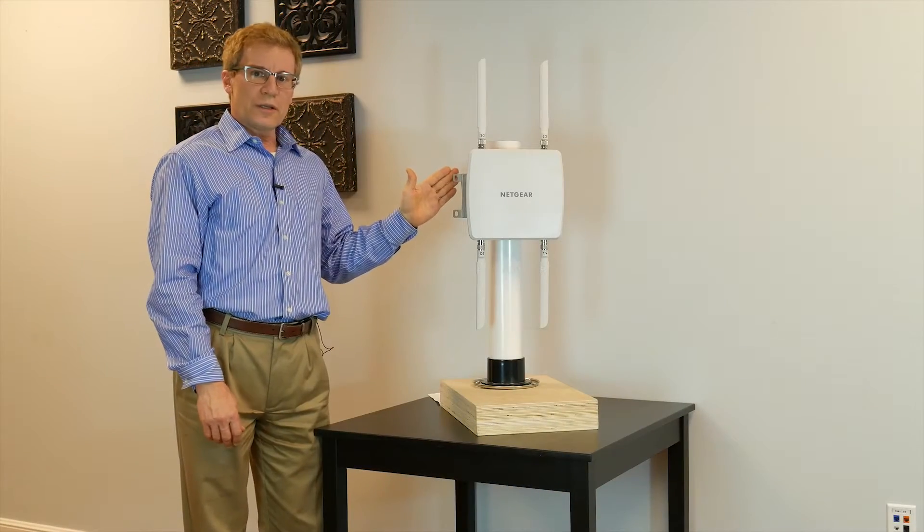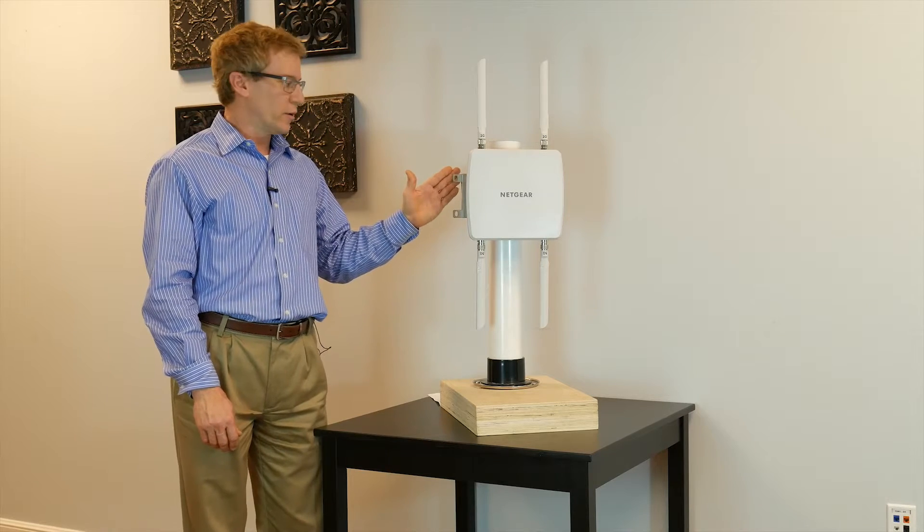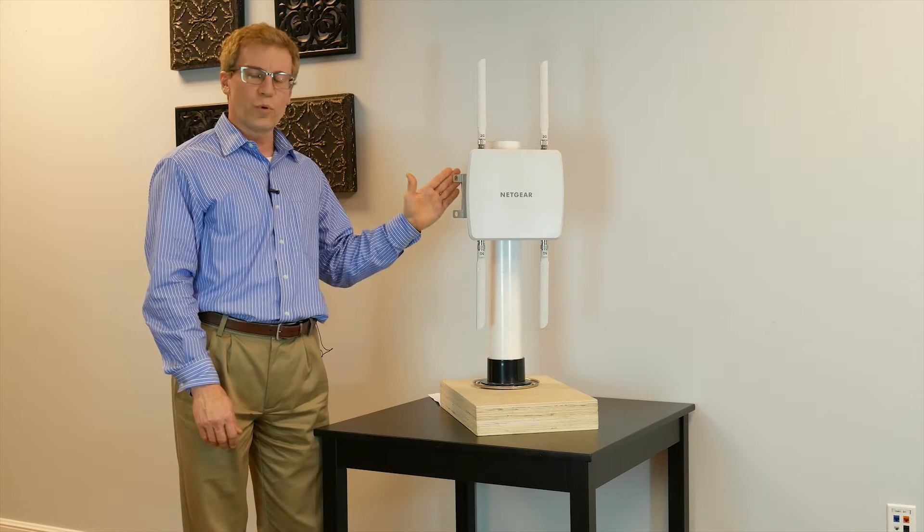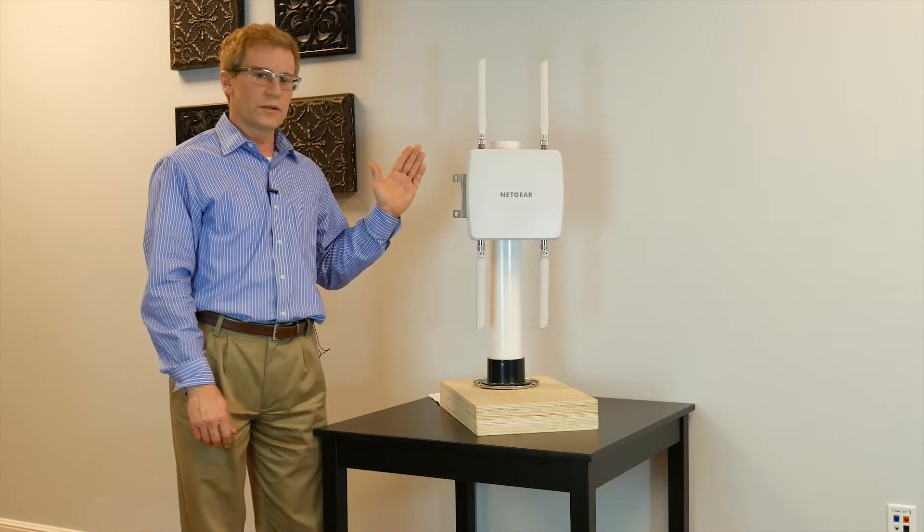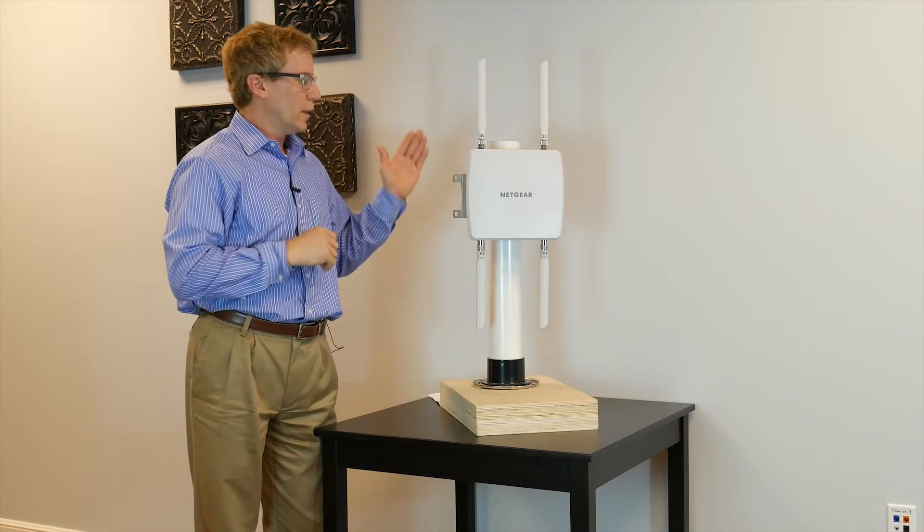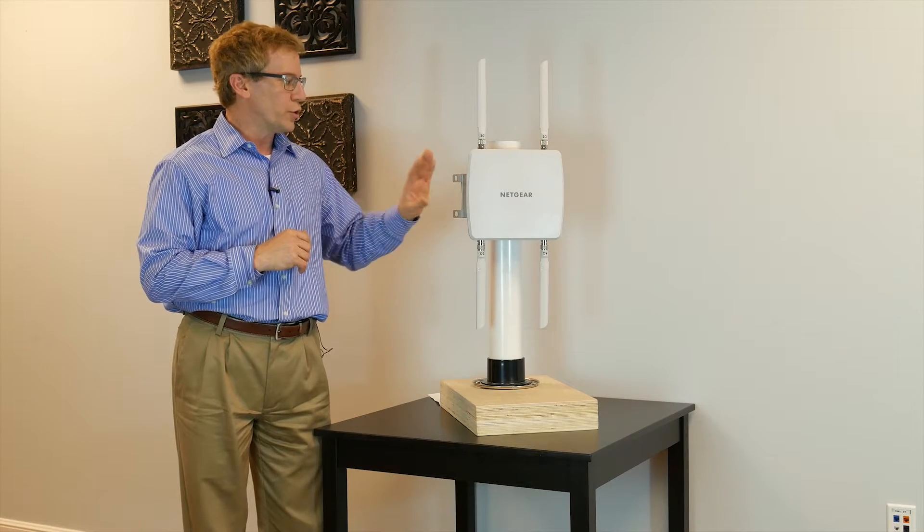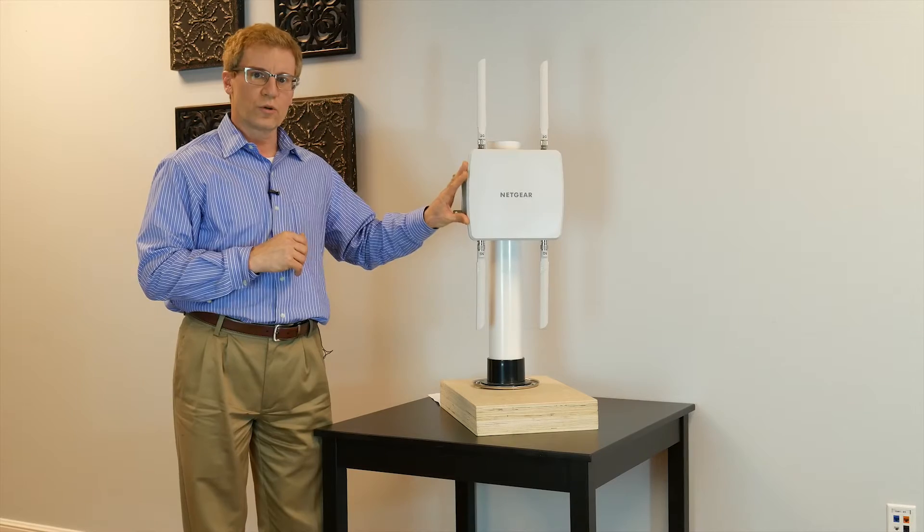When you're considering mounting this access point, you should be thinking about the usage pattern that you expect the access point to cover. For example, if you plan to cover an area going out in one direction, you can mount the access point on either a pole or the wall, and you should start with the internal antennas.